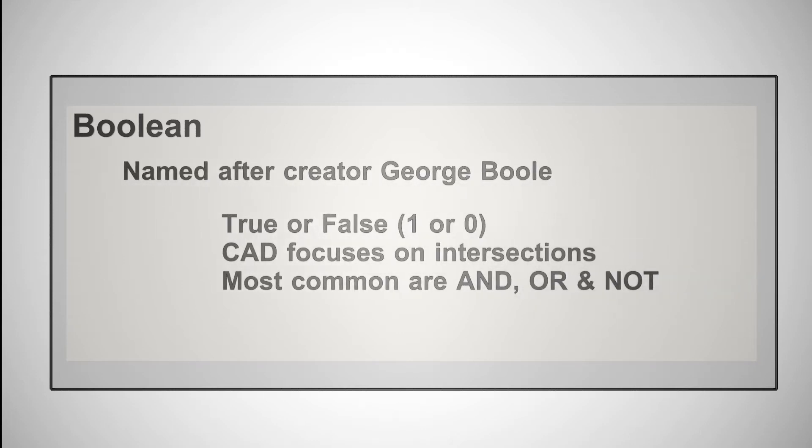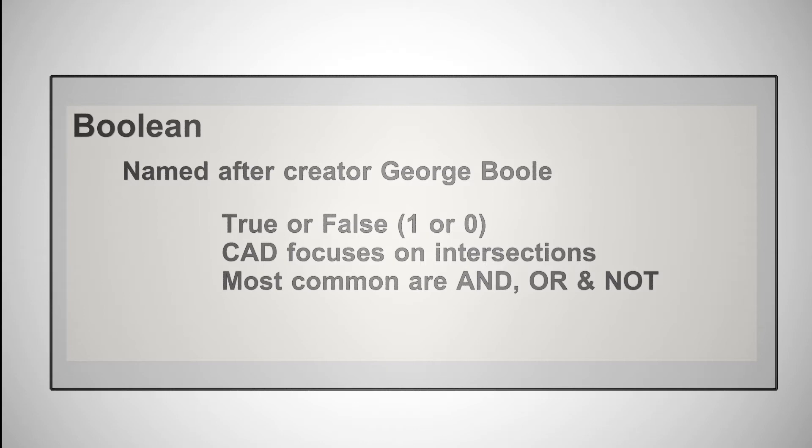Now the term Boolean itself comes from the creator George Boole, and it's simply a logic system used by computers that uses true or false values, or 0 or 1 in binary, to determine an answer to a problem, whether that be a search or something else. It can be used throughout computing applications, and the most common forms you'll find are AND, OR, and NOT.